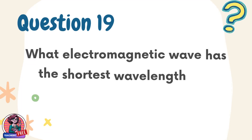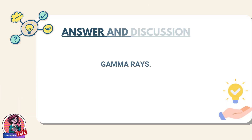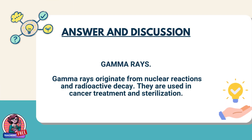Question 19. What electromagnetic wave has the shortest wavelength and highest energy? Answer: gamma rays. Gamma rays originate from nuclear reactions and radioactive decay. They are used in cancer treatment and sterilization.